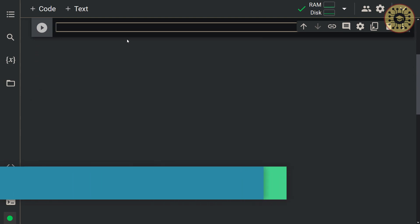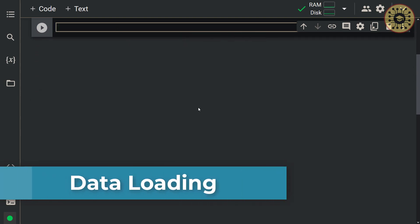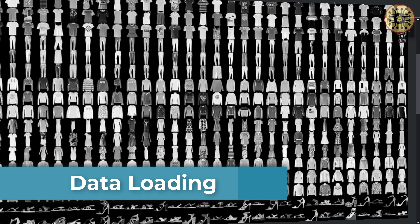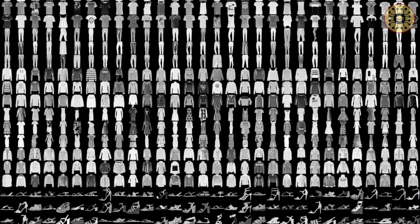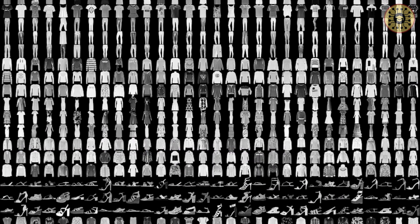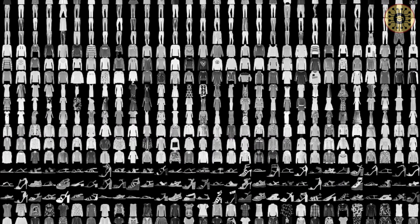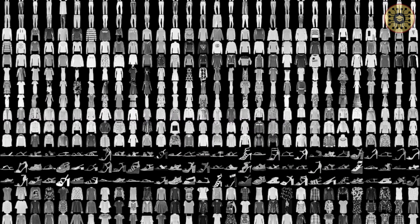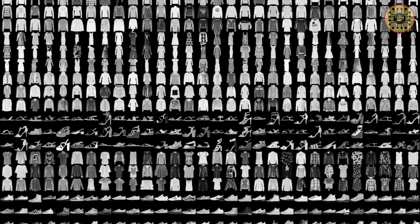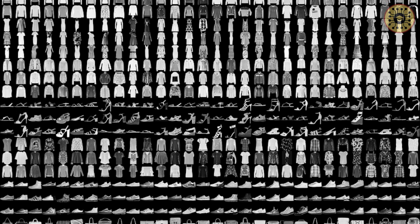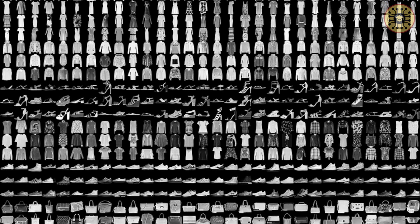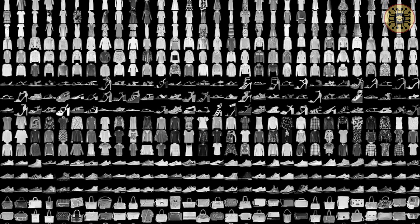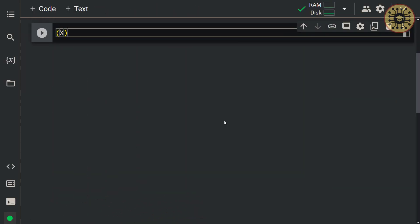Let's use the Fashion MNIST dataset to show how to fine-tune hyperparameters. This dataset consists of a training set of 60,000 examples and a test set of 10,000 examples. Each example is a 28×28 grayscale image associated with a label from 10 classes.